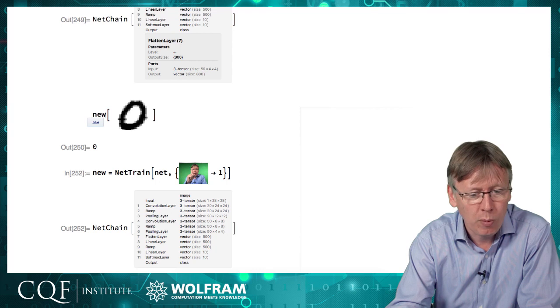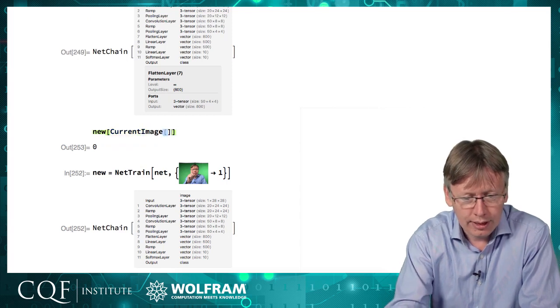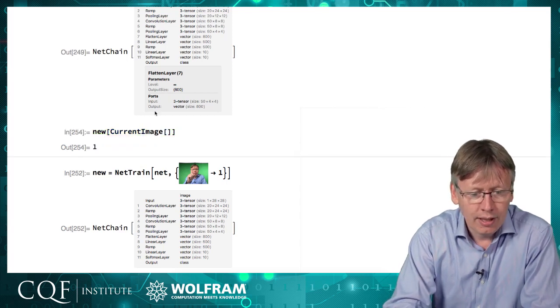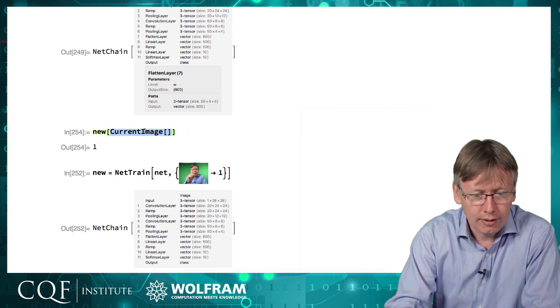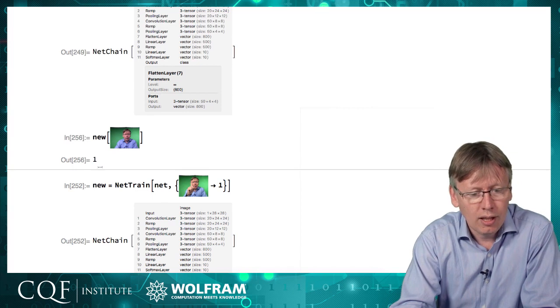So if I ask for that new network to be applied to the zero, we get the same value, but if I put in here, for example, another image of me then it makes a prediction that that's a one.